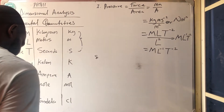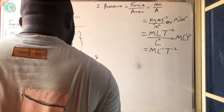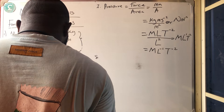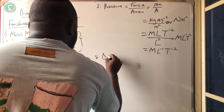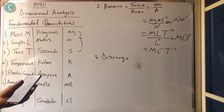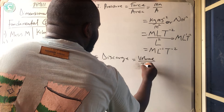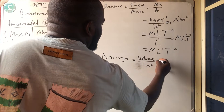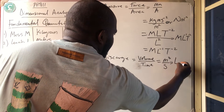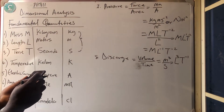Number 8 is discharge. Discharge is simply volume over time. Volume is meter cube, all over seconds. So the dimension is L raised to the power 3 times T raised to the power minus 1, giving L³T⁻¹.